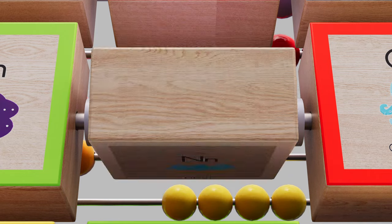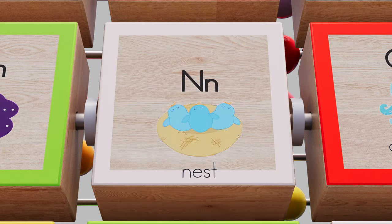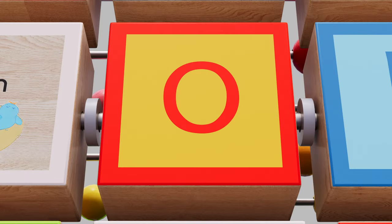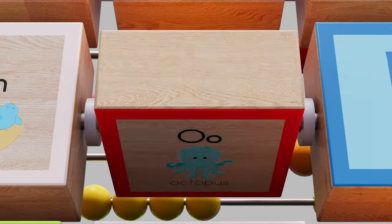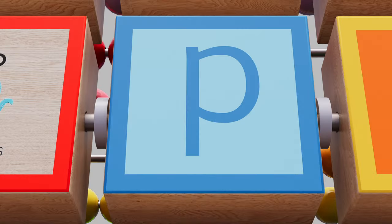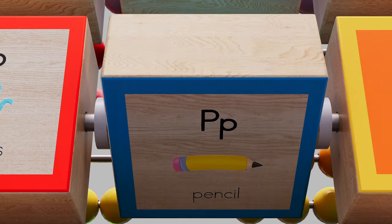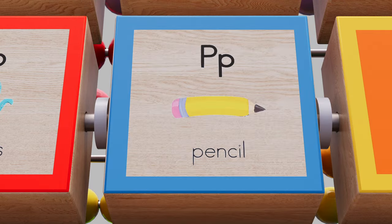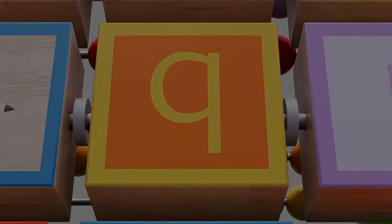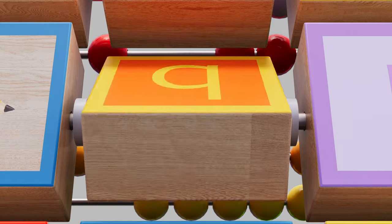N for nest, O for octopus, P for pencil, Q for queen.